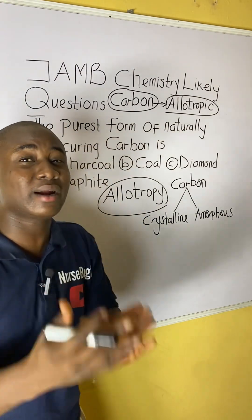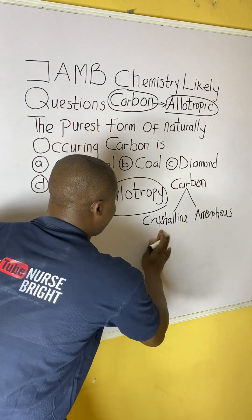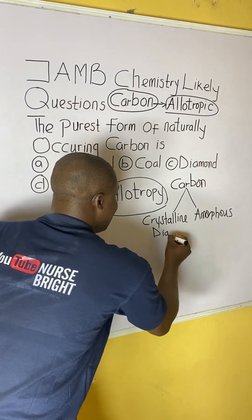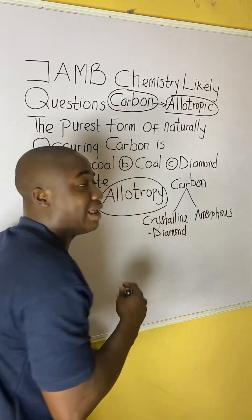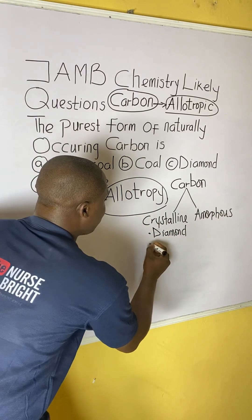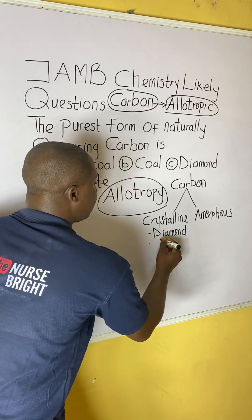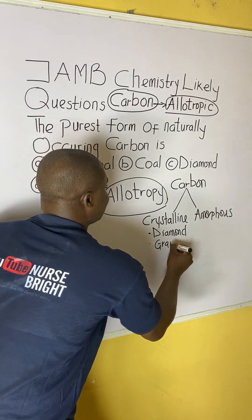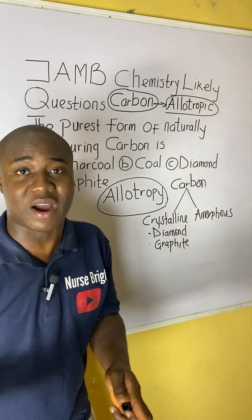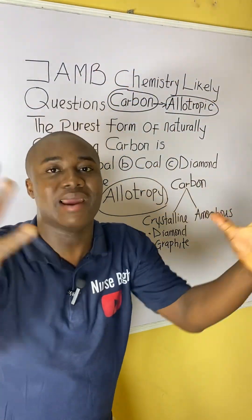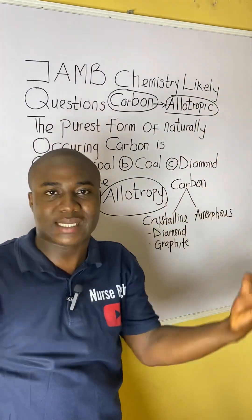What are the crystalline allotropic forms of carbon? Majorly, we have examples like diamond — diamond is one major crystalline allotropic form of carbon. We also have another crystalline allotropic form of carbon, which is graphite. The reason they are called crystalline is because, looking at their structure, they look like crystals.